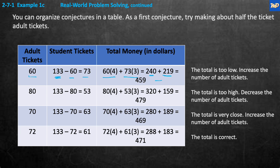With 80 adult tickets, 133 minus 80 is 53 student tickets. So 80 times $4 plus 53 times $3 gives $320 plus $159, which equals $479. But $479 is more than the $471 they made. So 80 was too much and 60 wasn't enough — let's try somewhere in between.